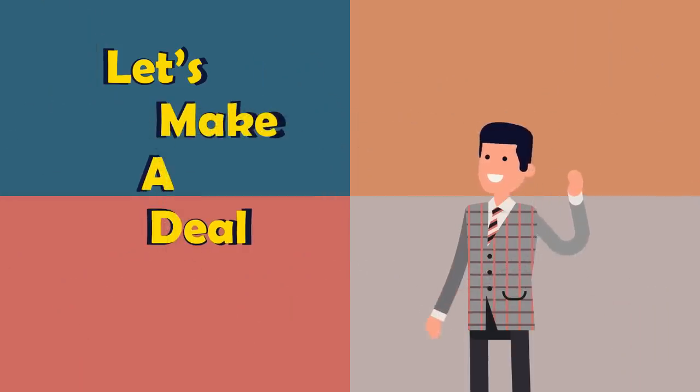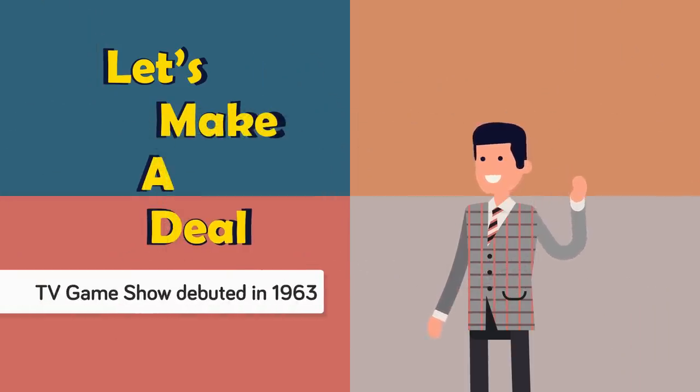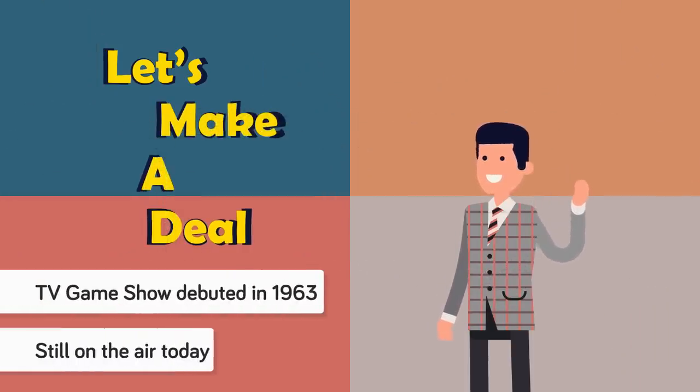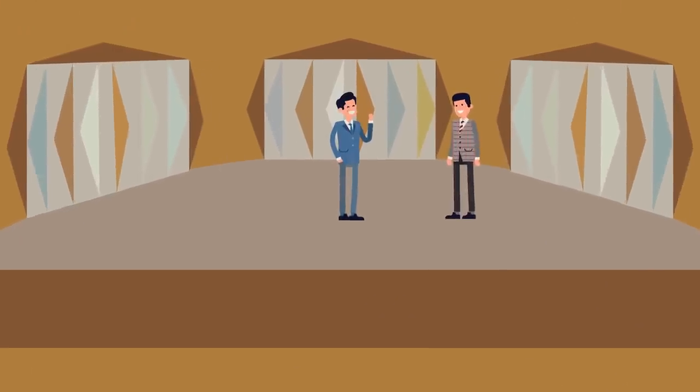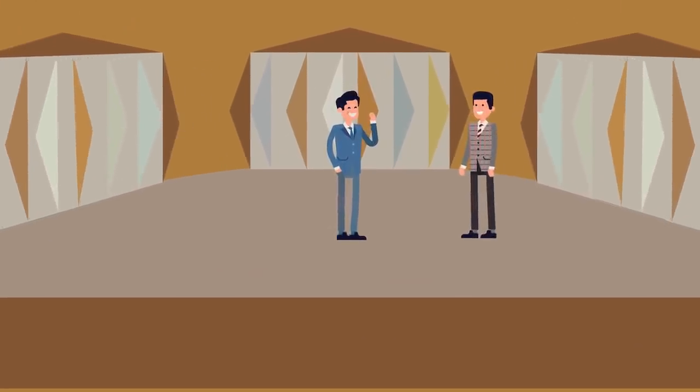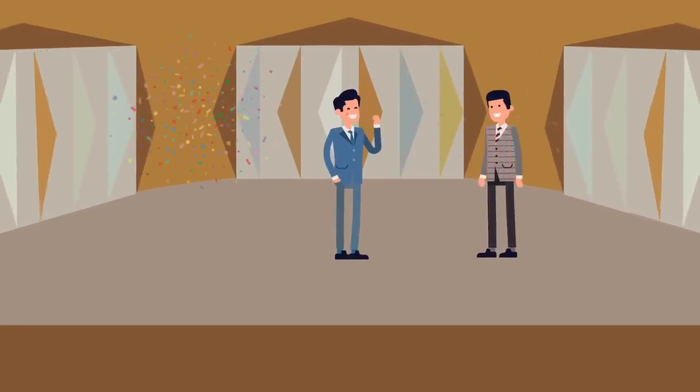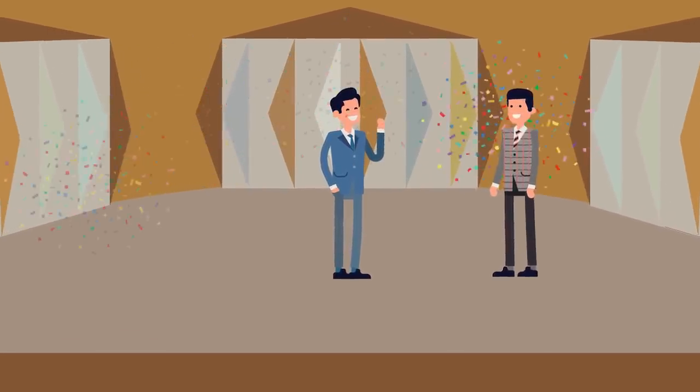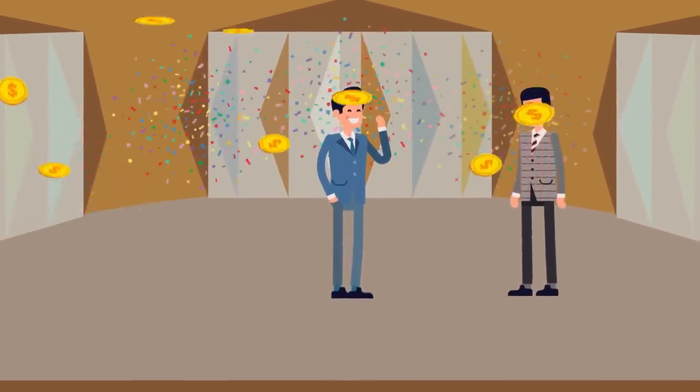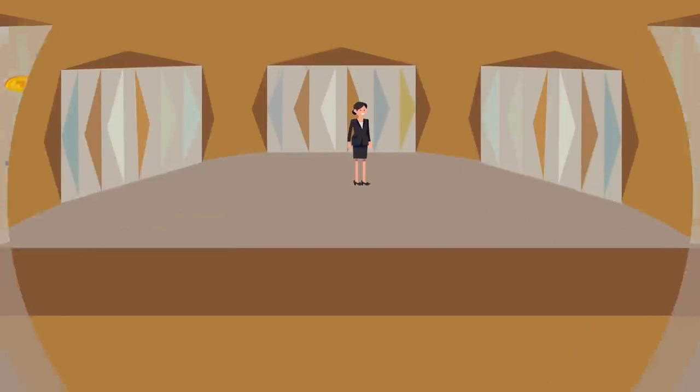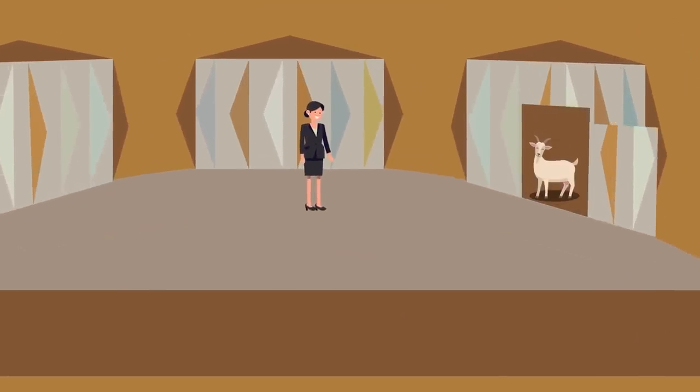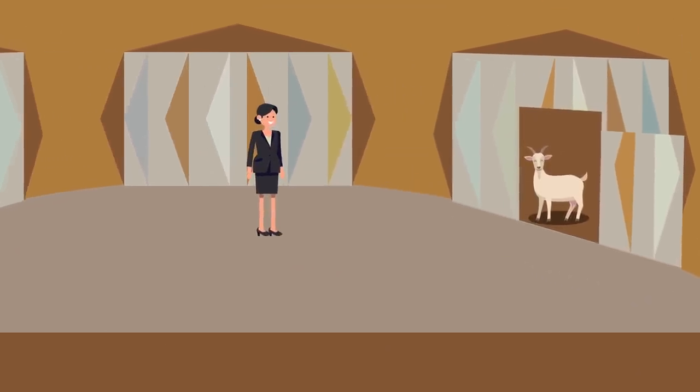Let's Make a Deal is a long-running TV game show that debuted in 1963 and is still on the air today. The early versions of the show featured contestants who made bargains with the show's co-creator and longtime host, Monty Hall. If the contestants were lucky and skilled at making deals, they could win cash and other prizes. But if they weren't, they received undesirable zonk prizes such as goats instead.